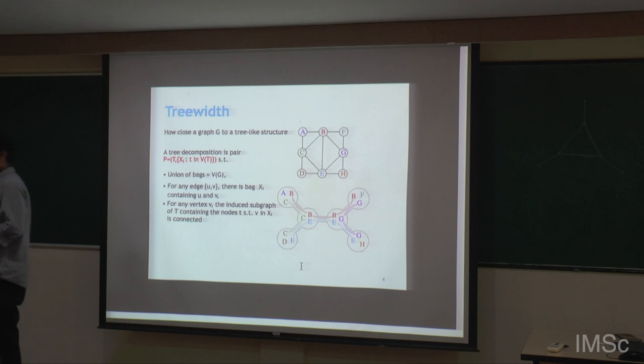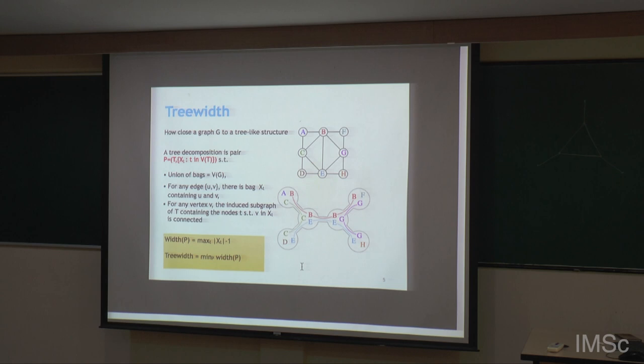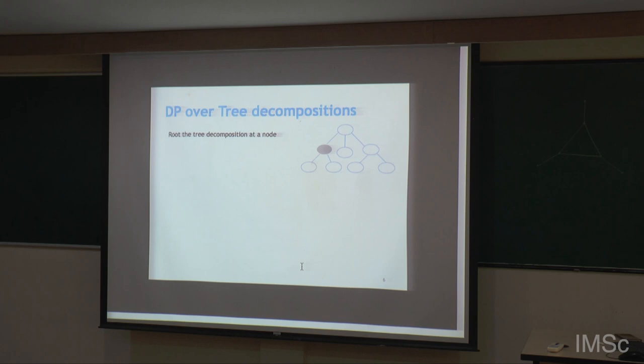So this is a tree decomposition. The width of a tree decomposition is the maximum size of a bag minus one, and tree width is the minimum over all tree decompositions of the width. Now, how do we do dynamic programming over a tree decomposition?